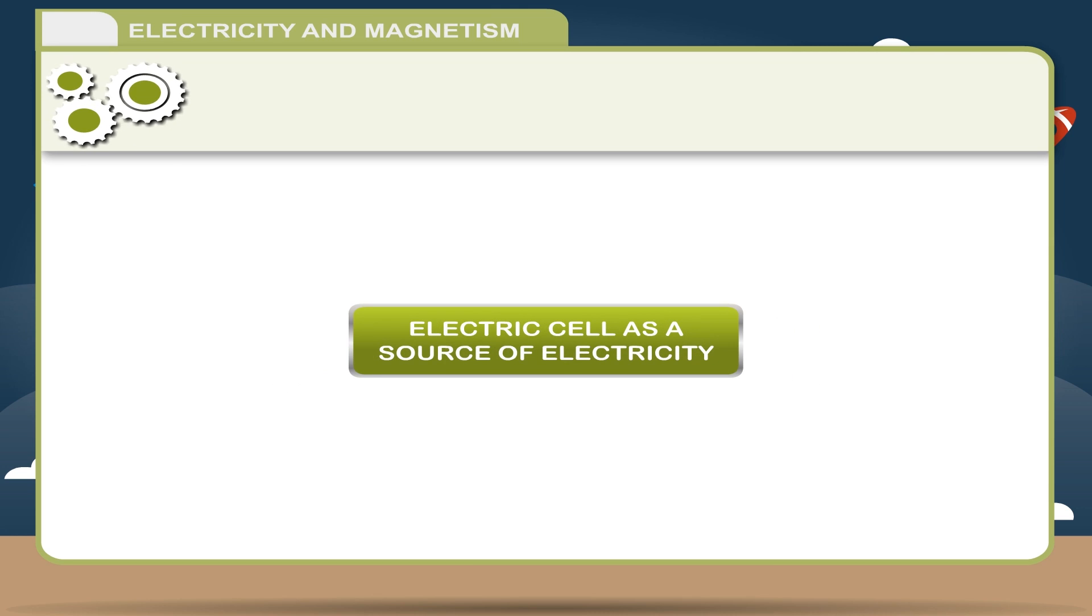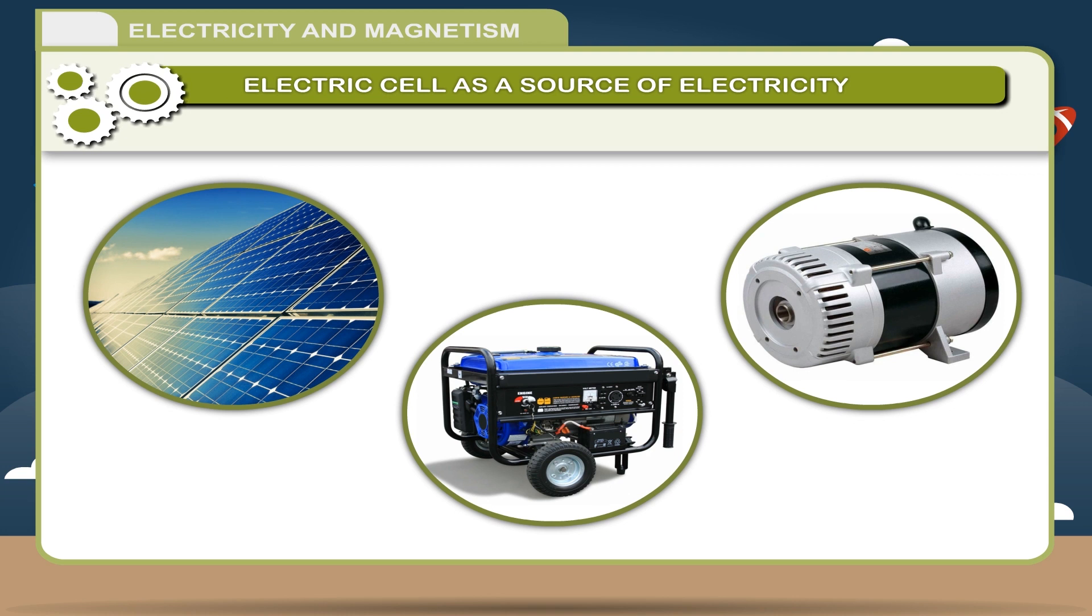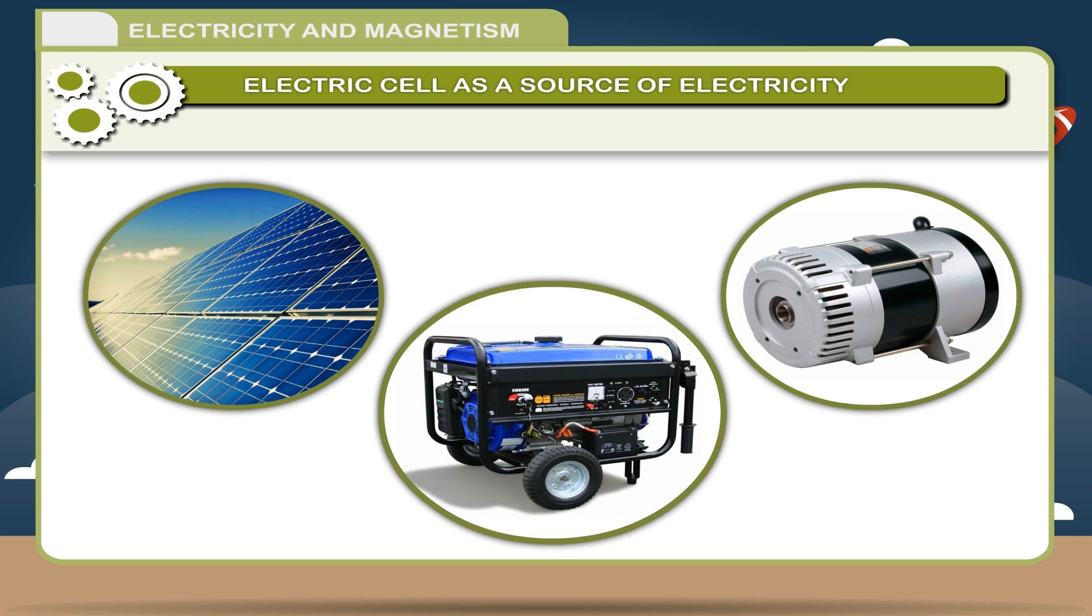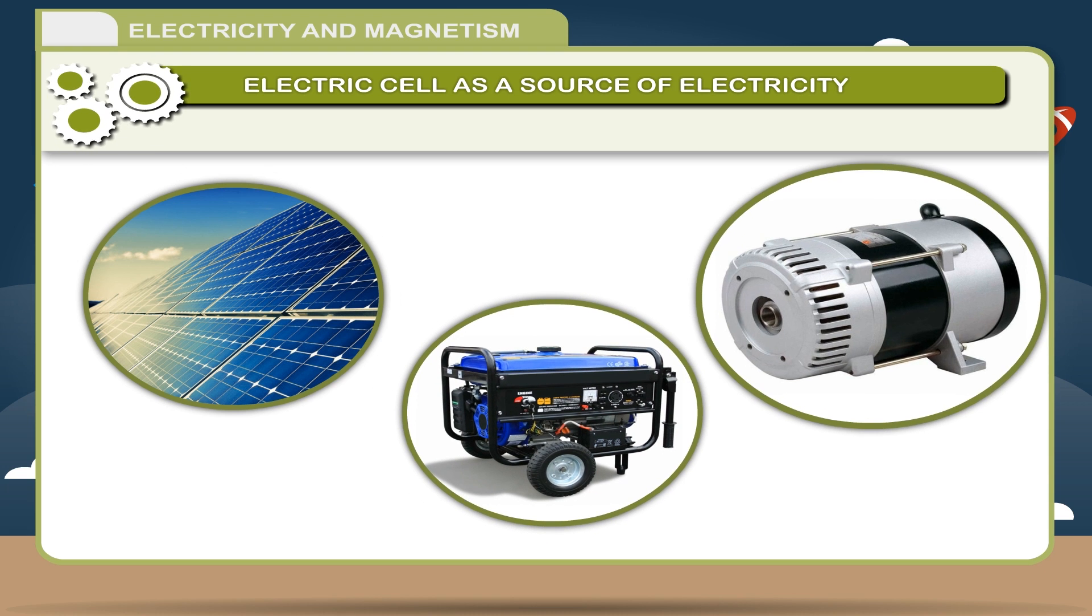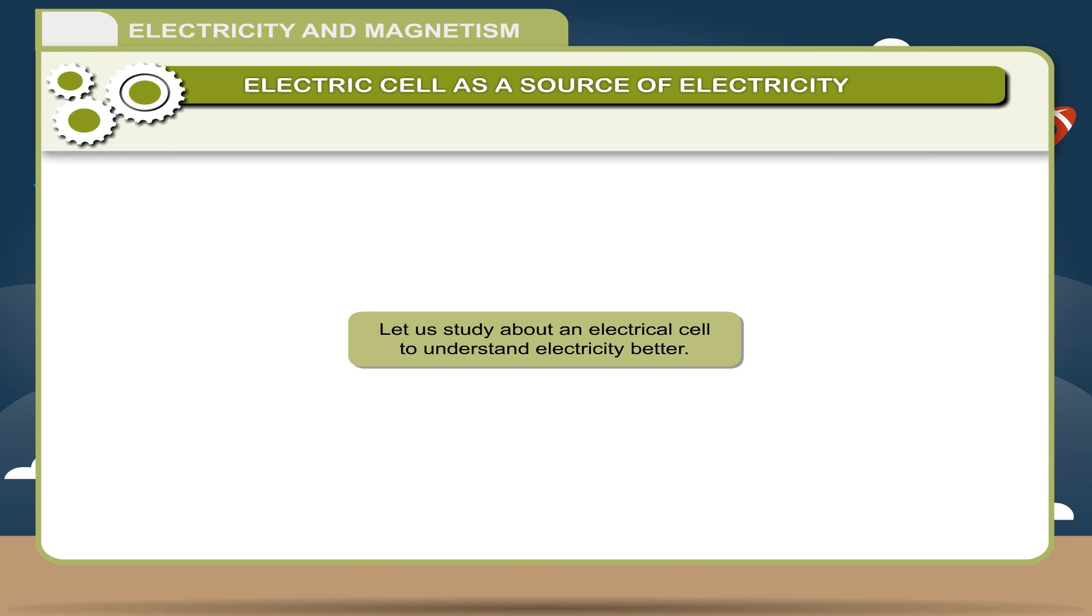Electric cell as a source of electricity. For the electric current to flow there has to be a source of electricity which could be derived from electrochemical cells, solar cells, electric generators or dynamos. Let us study about an electrical cell to understand electricity better.